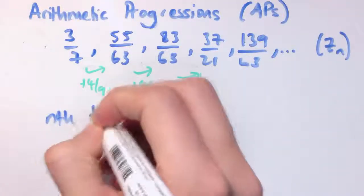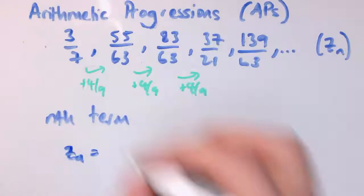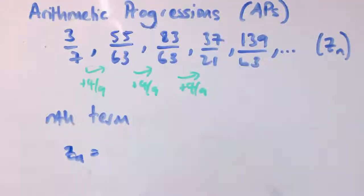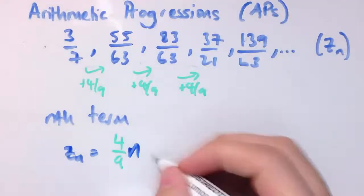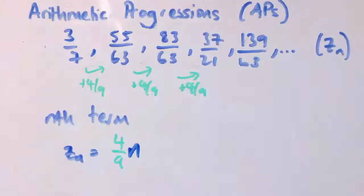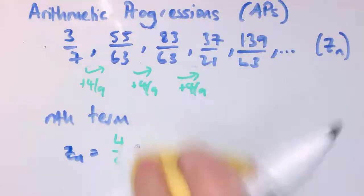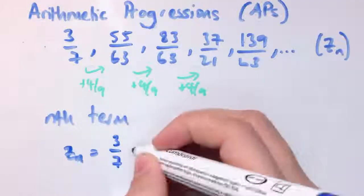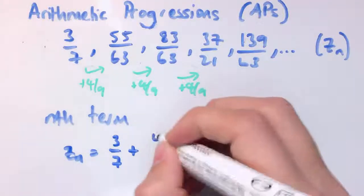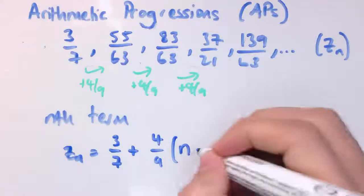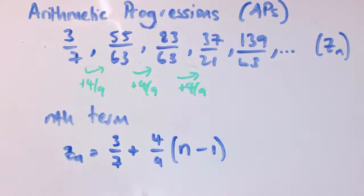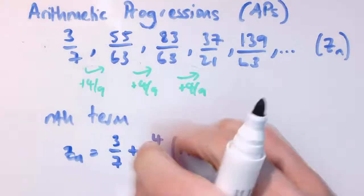To write down the nth term definition, z_n equals 4/9 times n, in the same way as before, plus or minus something to make it work. A neat way to write this is z_n equals 3/7 plus 4/9 times (n minus 1). When n equals 1, the (n minus 1) term is 0 so it disappears, giving z_1 equals 3/7. This really spells out what's going on and will motivate the general formula for an arithmetic progression.